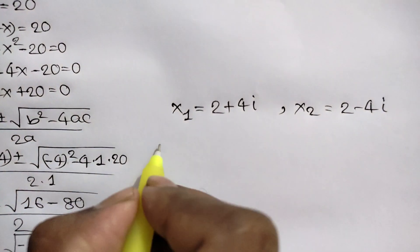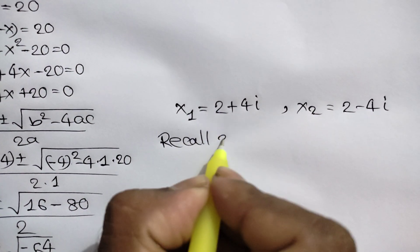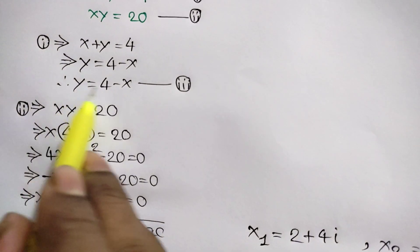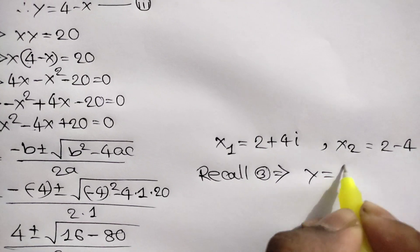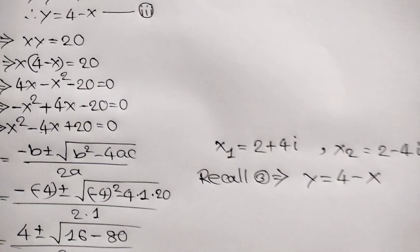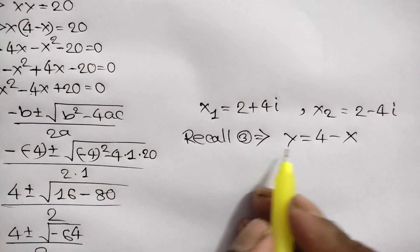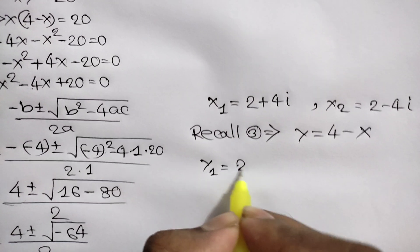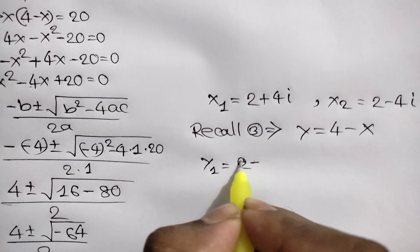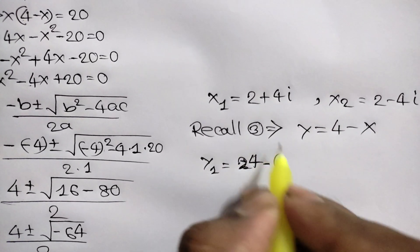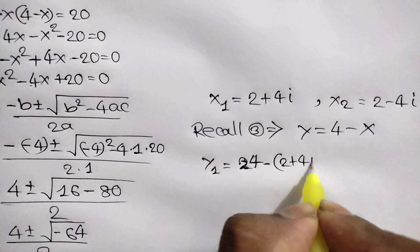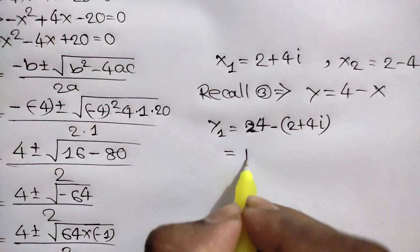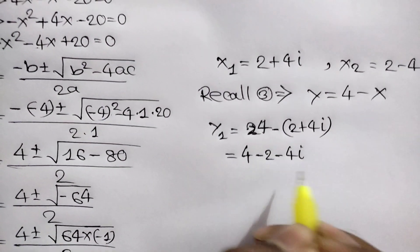Now, recalling equation 3: y is equal to 4 minus x. There are two values of y. y1 is equal to 4 minus (2 plus 4i), which equals 2 minus 4i. And y2 is equal to 4 minus (2 minus 4i), which equals 2 plus 4i.